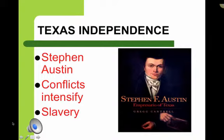American colonist Stephen Austin — known for giving his name to Austin, Texas — established a colony of Americans in Texas, and conflicts between Mexicans and Americans intensified. One major issue was slavery: Americans brought enslaved people into Texas, but Mexico had outlawed slavery in 1829 and did not appreciate slaves being brought into their territory.